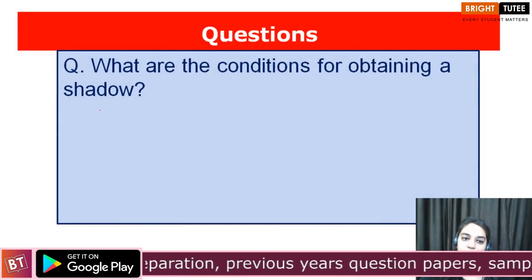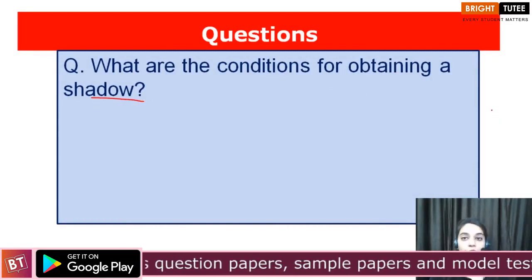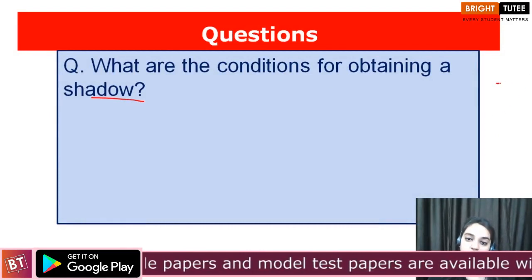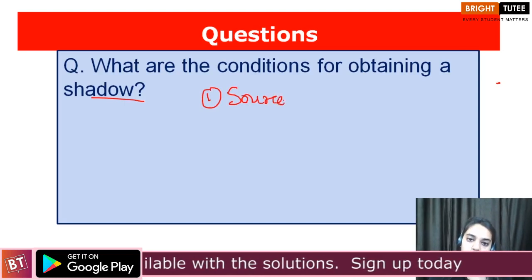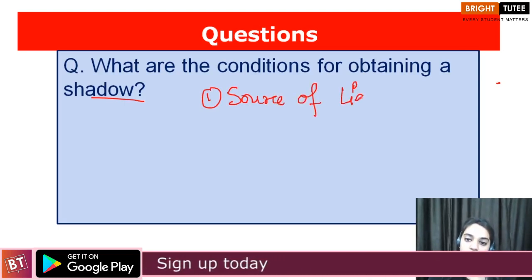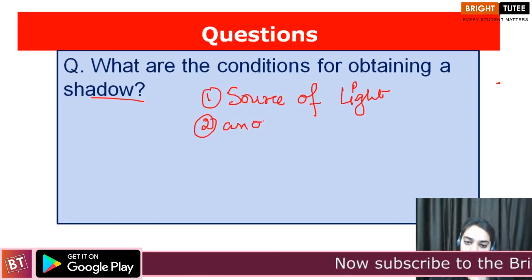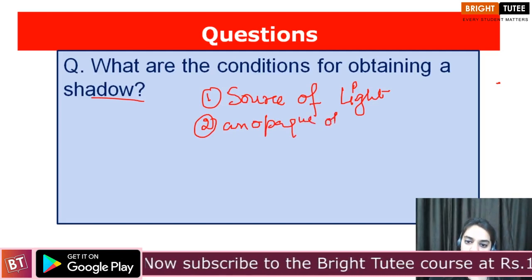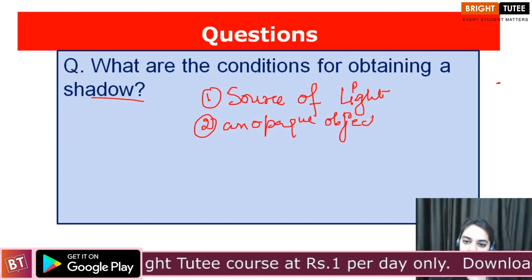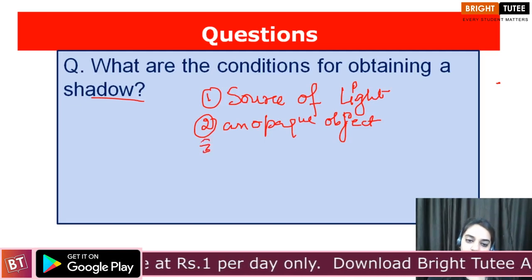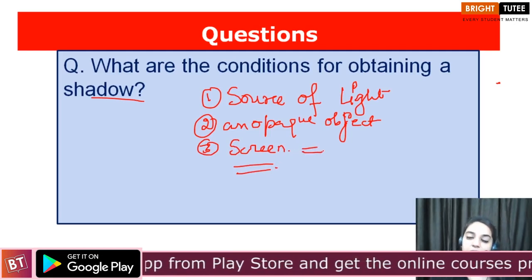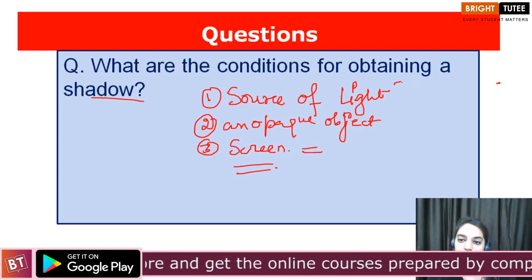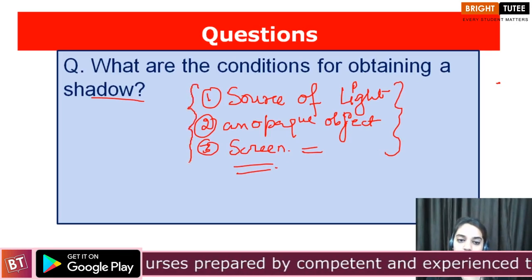What are the conditions for obtaining a shadow? We will be needing first a source of light, which is very important for obtaining a shadow. Then we need an opaque object to block the path of light. Then finally, we will be needing a screen to obtain the shadow on. These are the three essential things required to create a shadow.